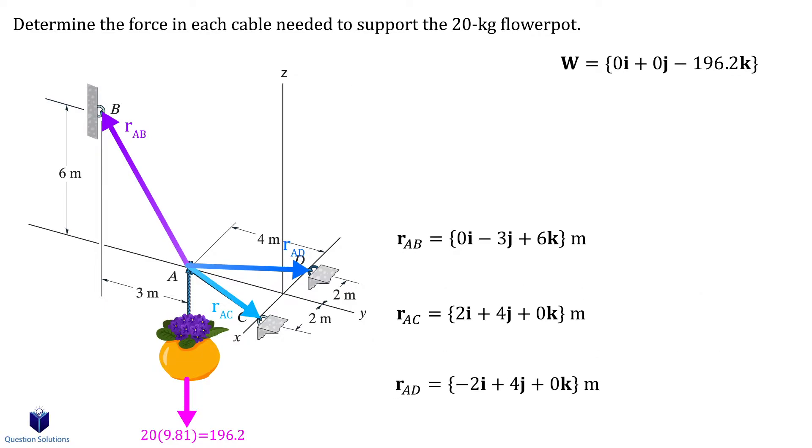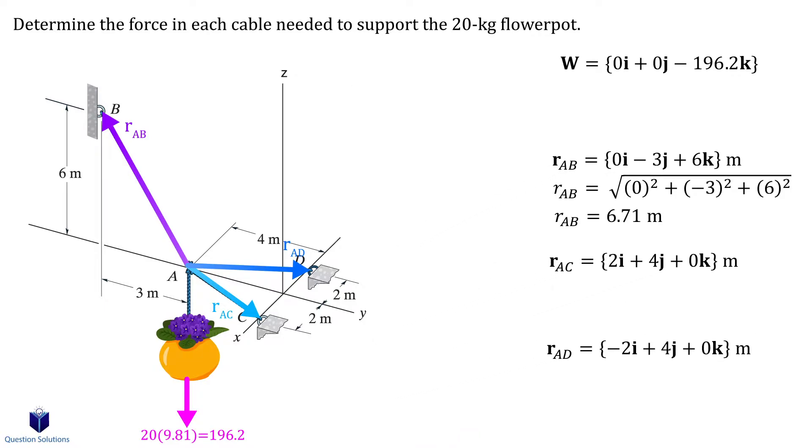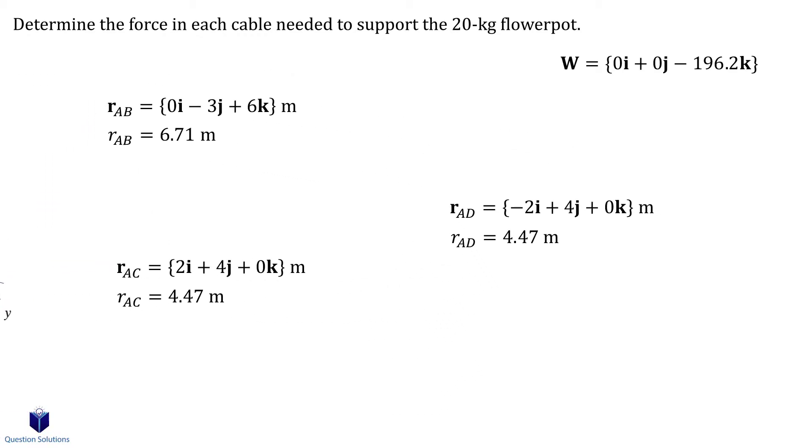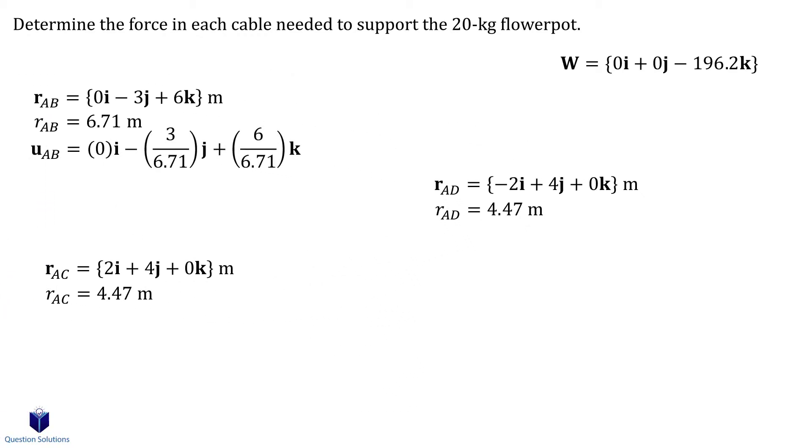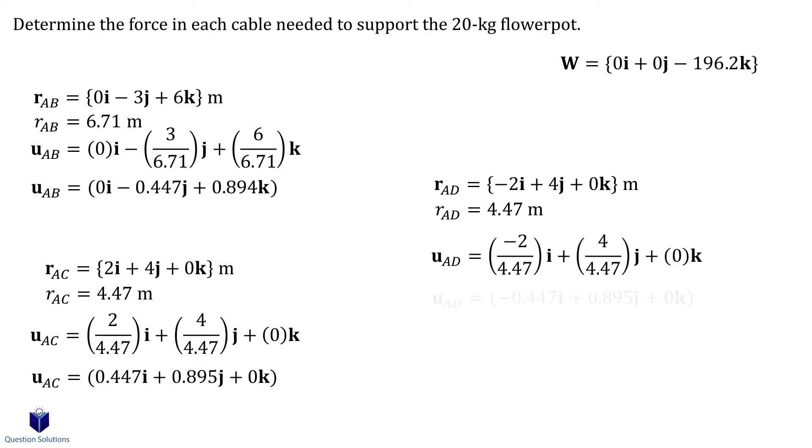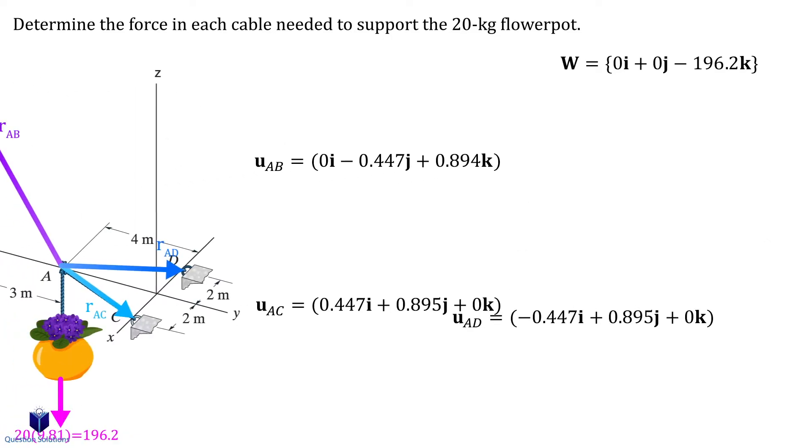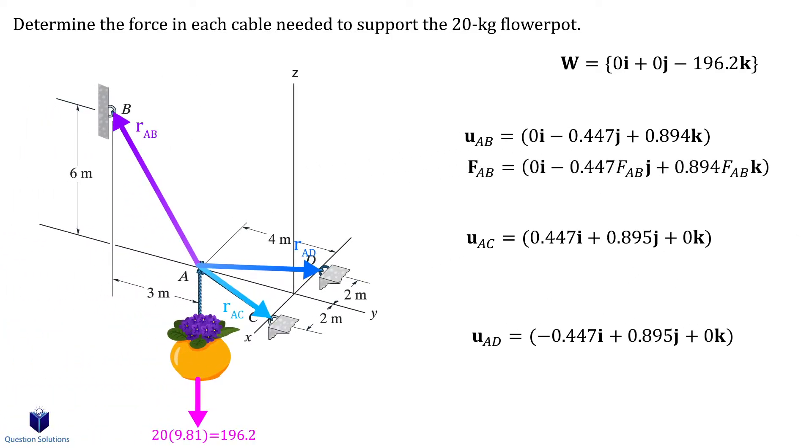Next we can calculate the magnitude of each position vector. Now comes the unit vectors, so we're just dividing each component of our position vector by the magnitude.